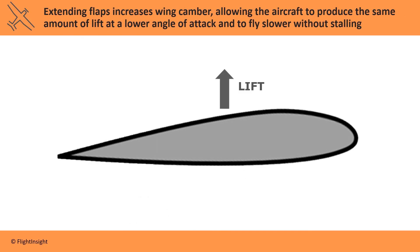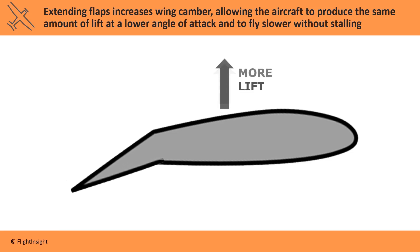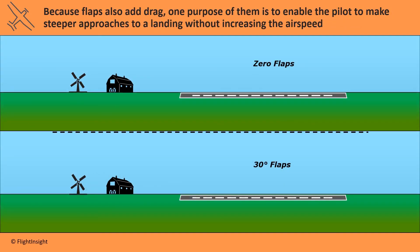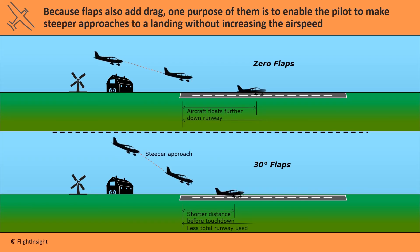Flaps are a secondary control surface on the trailing edge of some aircraft. Extending flaps increases wing camber, allowing the aircraft to produce the same amount of lift at a lower angle of attack and to fly slower without stalling. Because flaps also add drag, one purpose of them is to enable the pilot to make steeper approaches to a landing without increasing airspeed.